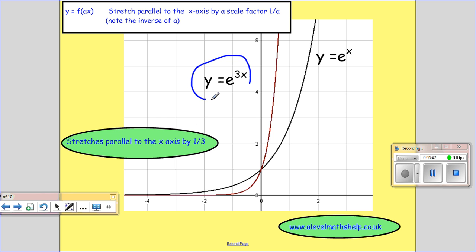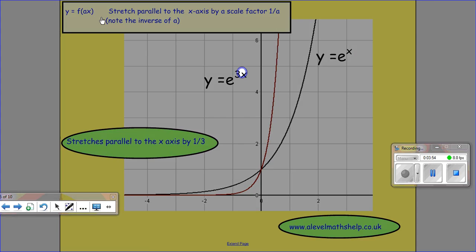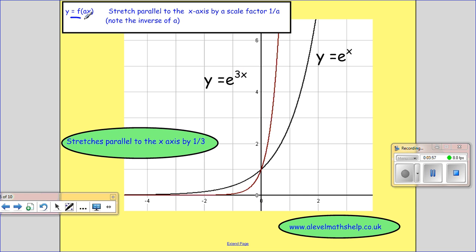OK, so y equals e to the 3x. This, again, is inside the function. So we use this one. And this is a stretch parallel to the x-axis by a scale factor of 1 over a. So that means that we'd get the same answer when x is made smaller by a factor of 1 over a. So when x equals 1, we get the same answer when x equals a third. So when x equals, say, 1 and 1 half, which is about here, we get the same answer when x equals 1 half. And that's because you multiplied your x by 3, so you don't need as many x's to get the same answer.